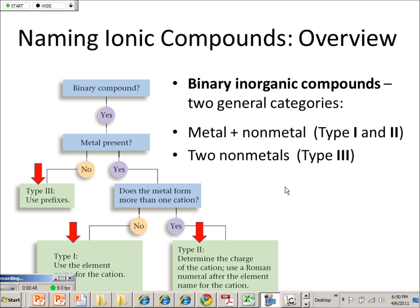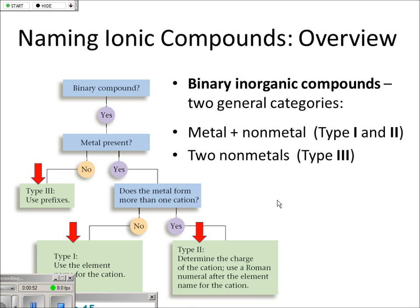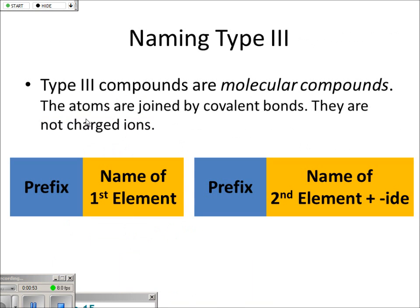Again, this is the book's nomenclature — you can use it if you want. Type 3 compounds are quote-unquote molecular compounds. The idea is that these things aren't ions that are just loosely bound together; they actually have a bond. They're sharing electrons. They are not charged ions.